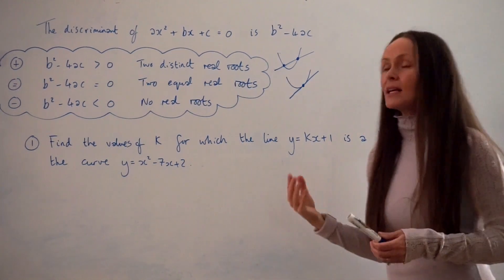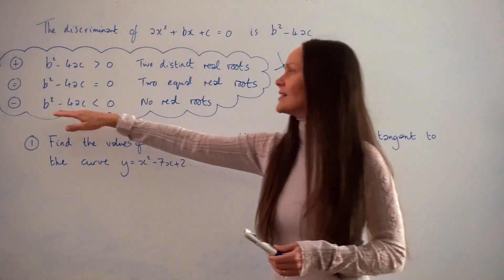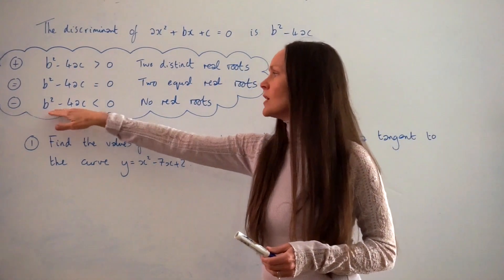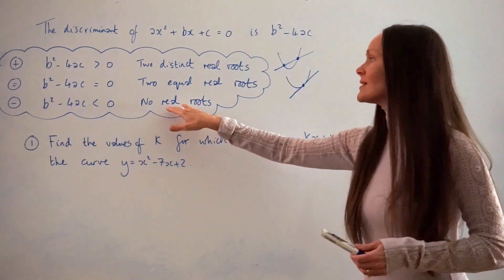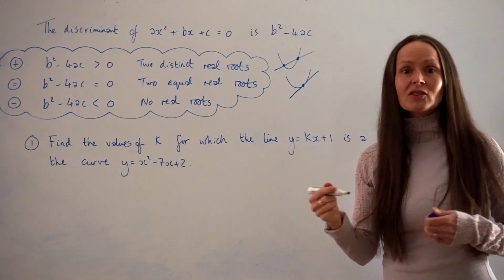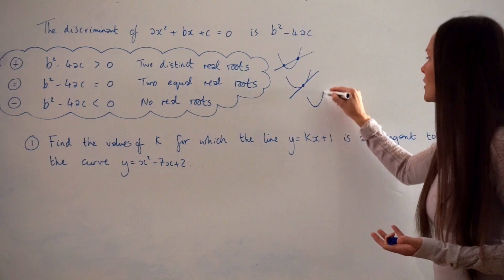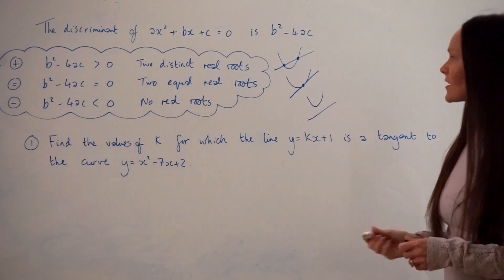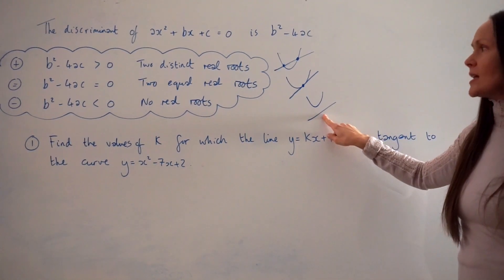And finally, if you work out the discriminant and it's negative — less than zero — it means there are no real roots. That just means the curve and the straight line don't intersect with each other, like in this sketch here.